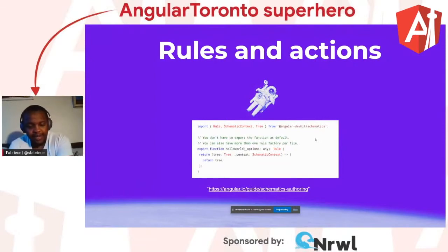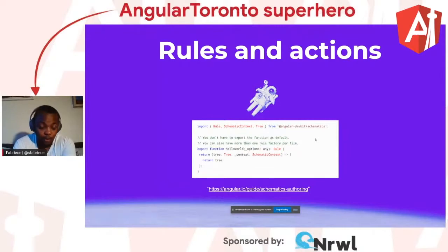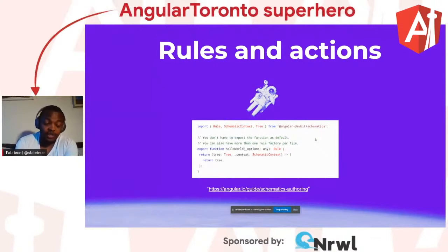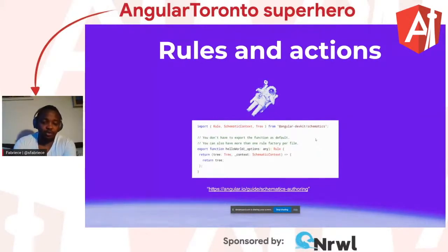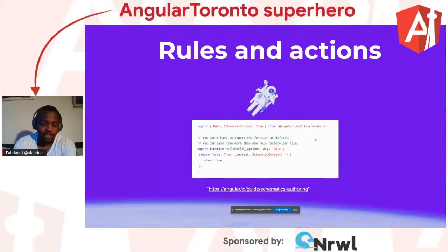A tree is a representation of the file system on your disk, or of your project. By the way, schematics are not Angular-specific — they can be used in other projects. It just so happens that Angular has built schematics into the CLI, which enables us to use them for transformations in Angular projects. Context is just an object that gives you some properties and functions to manipulate the tree.